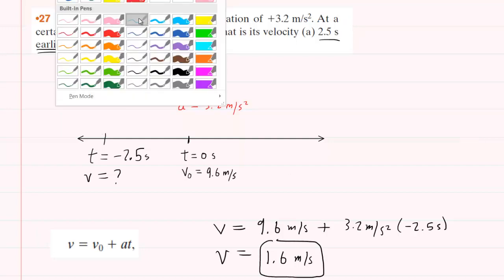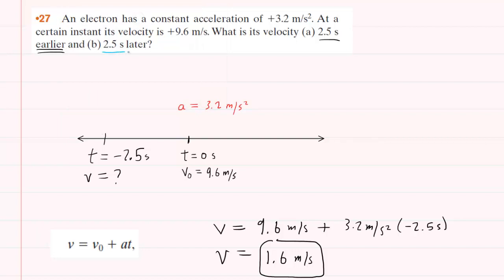Now, in part B, we can use the same timeline, but this time we'll be moving forward in time two and a half seconds later. So we'll be positioning our time to the right of our reference, and we will call this positive 2.5 seconds.